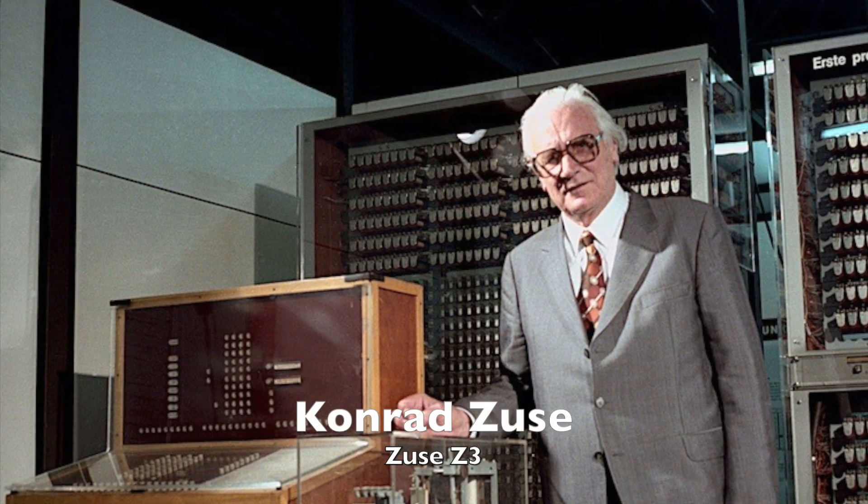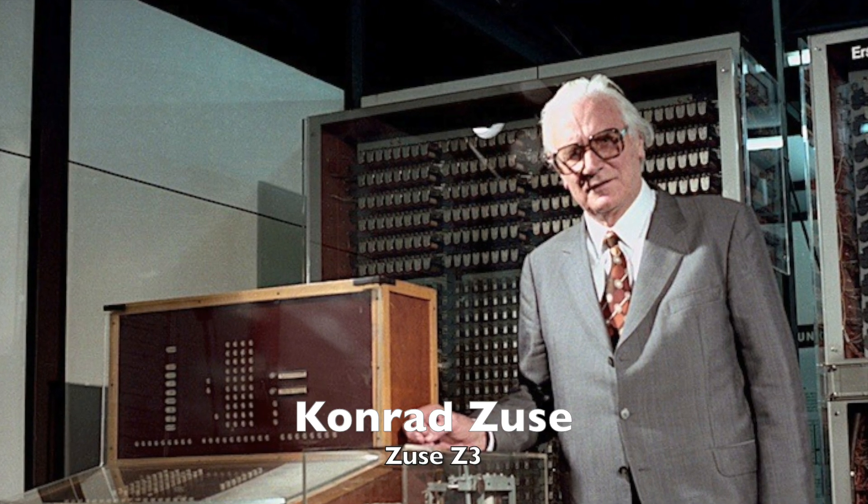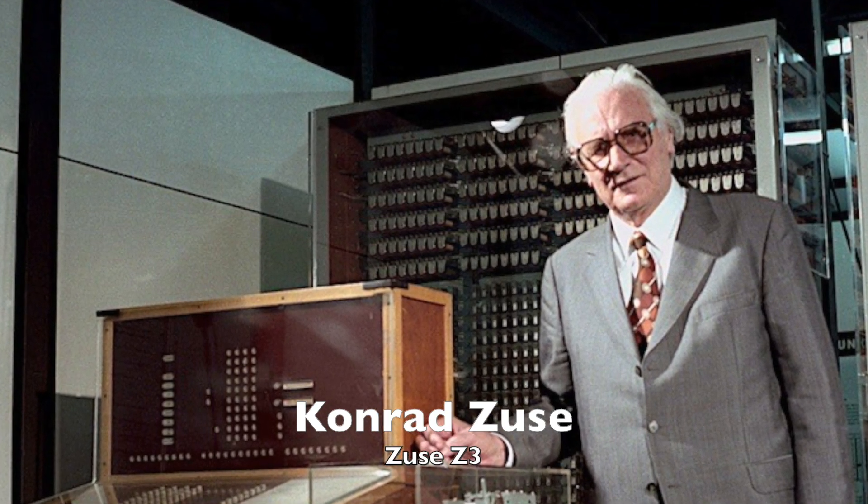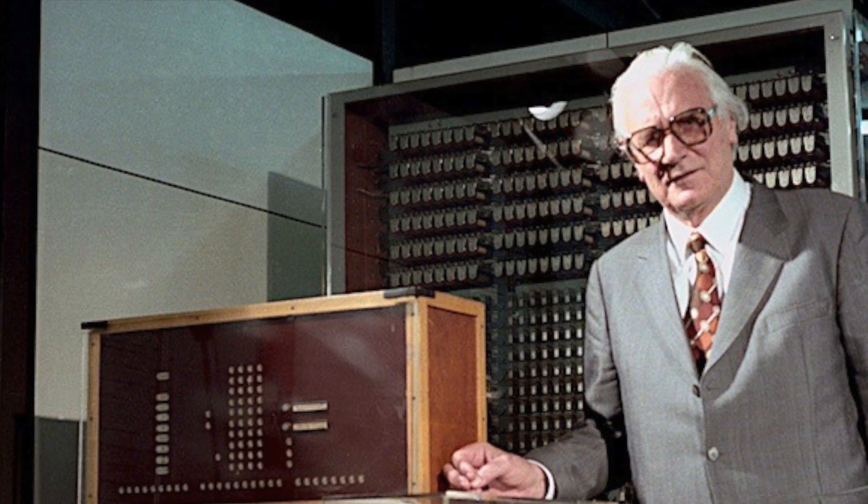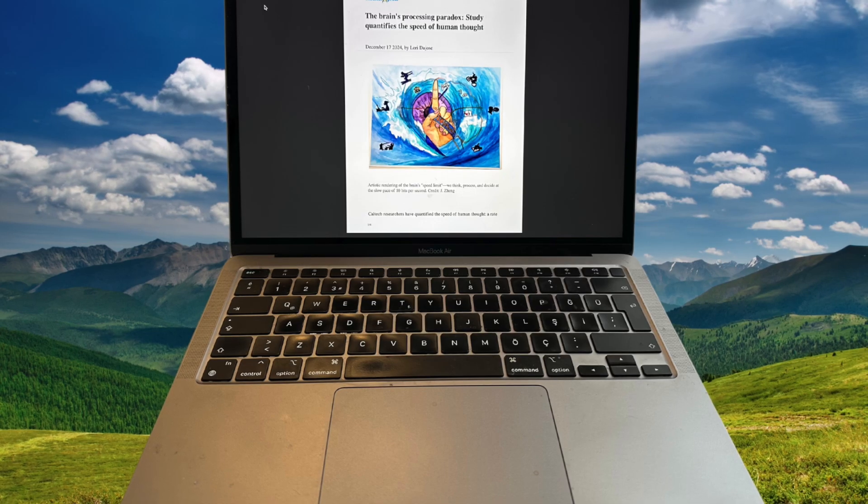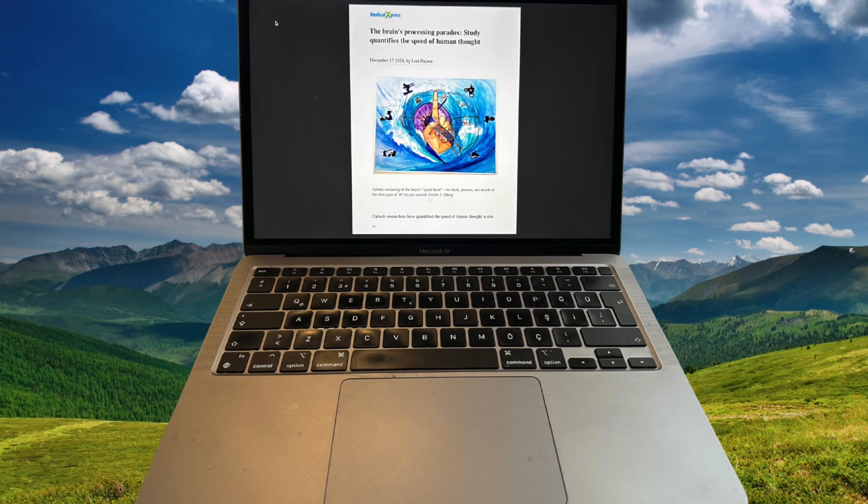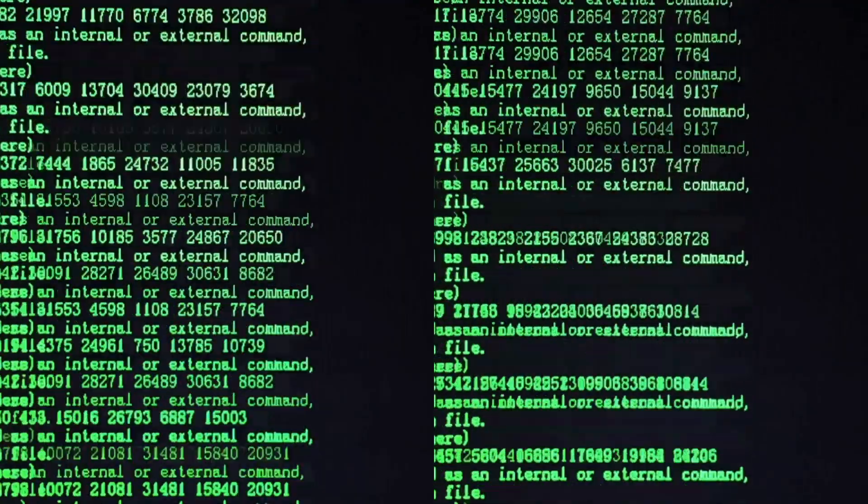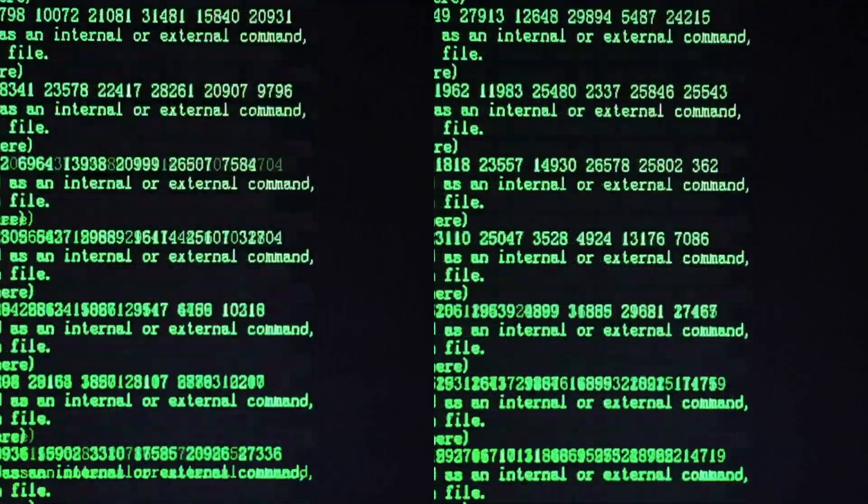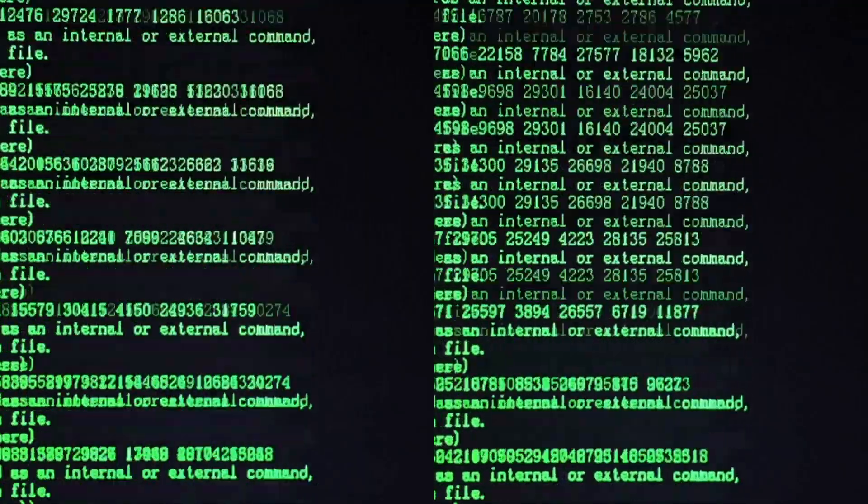To put this into perspective, consider the Zeus Z3, the world's first programmable computer developed in 1941. It also processed around 10 bits per second. Fast forward to today, and an M2 MacBook Air processes an astounding 1.7 trillion bits per second. And that's not even counting supercomputers or quantum computers.